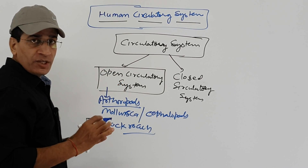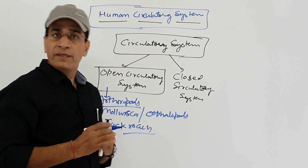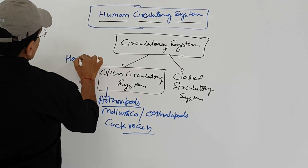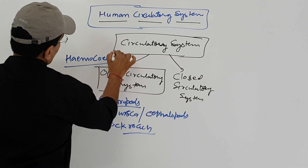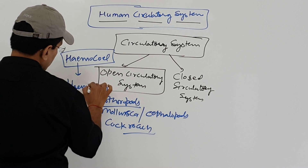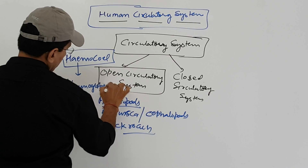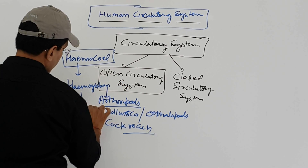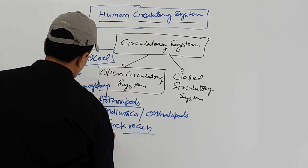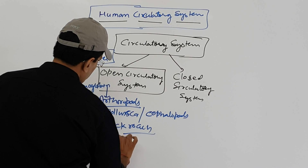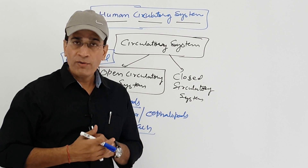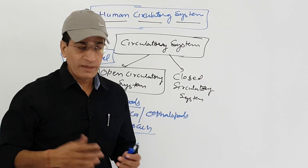In the open circulatory system, hemocoel is present, which is a mixture of tissue and blood. It does not contain hemoglobin, which provides the red color to blood. Because it lacks hemoglobin, it is white in color. Collectively this fluid is known as hemolymph. The white blood of insects is also known as hemocoel or hemolymph.